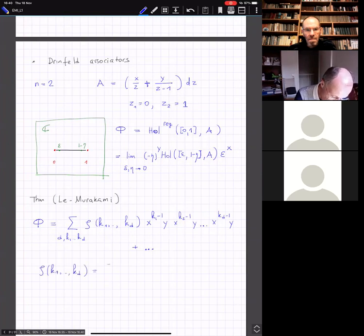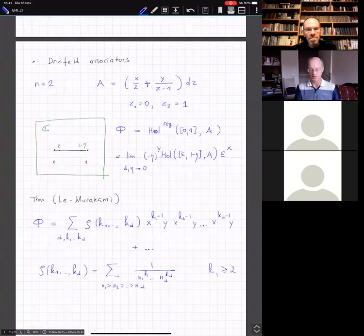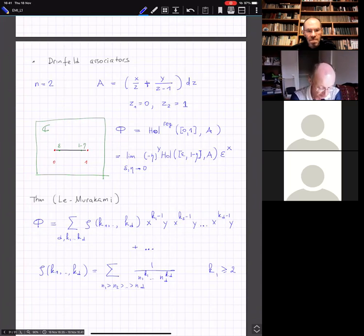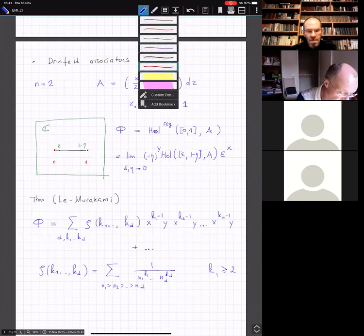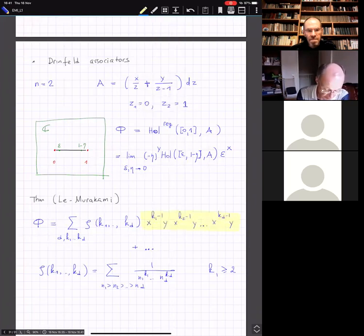These are kind of multidimensional analogs of integer values of the Riemann zeta function, or positive integer values of the Riemann zeta function. These are very interesting numbers. But for us, maybe we should first focus on this expression. Note that if k1 is greater or equal to 2, then these are words which start with x and end with y. Then the dots, the claim is that there are unique dots which are the other words which either don't start with x or don't end with y, all the other words such that phi is group-like.